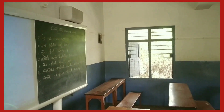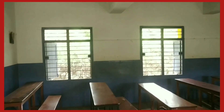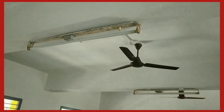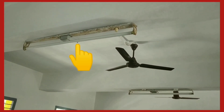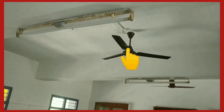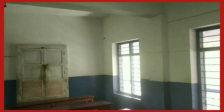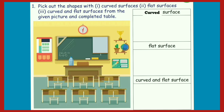Children, observe the things in the classroom and identify whether it is a curved surface, flat surface, or curved and flat surfaces. The cube light has curved and flat surfaces. The fan has curved and flat surfaces. Windows, notice board, table and benches have flat surfaces. Now pick out the shapes with curved surfaces, flat surfaces, and curved and flat surfaces from the given picture and complete the table.